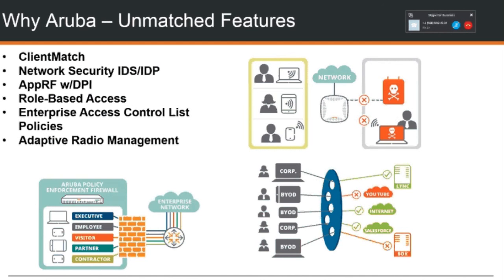We also have Application RF, which shows you the applications users are using — and you actually have the capability of doing something about it. It's not just seeing that they're using BitTorrent again. It's more about being able to do rule-based access — deny, enhance, or limit access to certain kinds of applications.